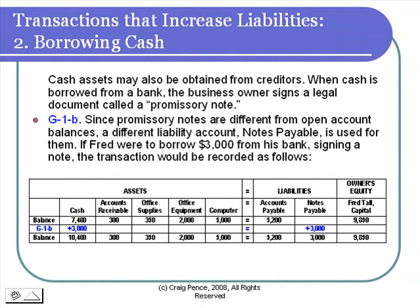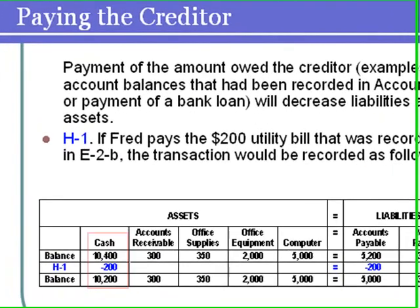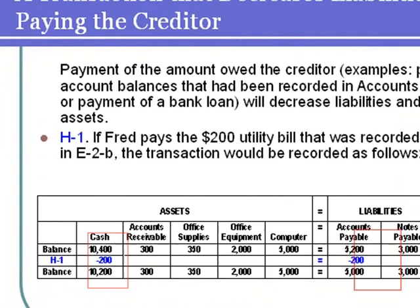In the next transaction, Fred pays the $200 account balance that's owed to the office supply company. In order to record the payment of that liability, we'll need to reduce cash assets by $200, and then since we no longer have this $200 obligation, we'll need to reduce accounts payable.